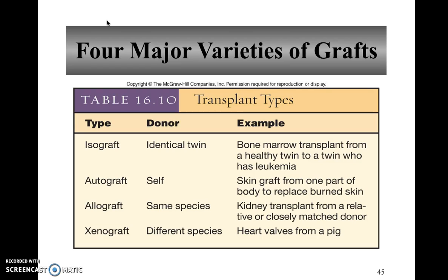An autograft — remember 'auto' means self — is where you take tissue from one part of a person's body and move it somewhere else. For instance, if someone has a torn ligament, they may take a ligament from another part of the body to replace it. More often, this is used with burn victims, where you take skin from an unaffected part of the body and transplant it to the burned area.